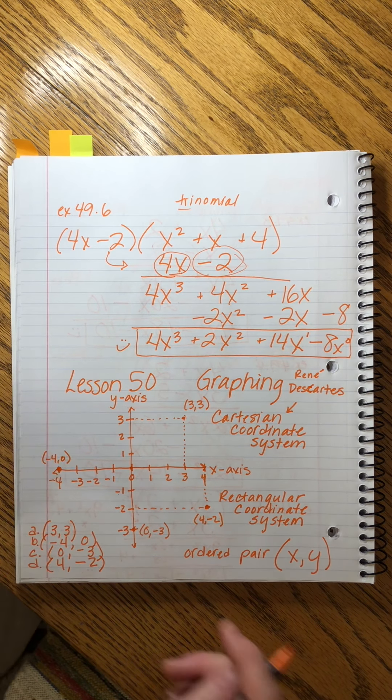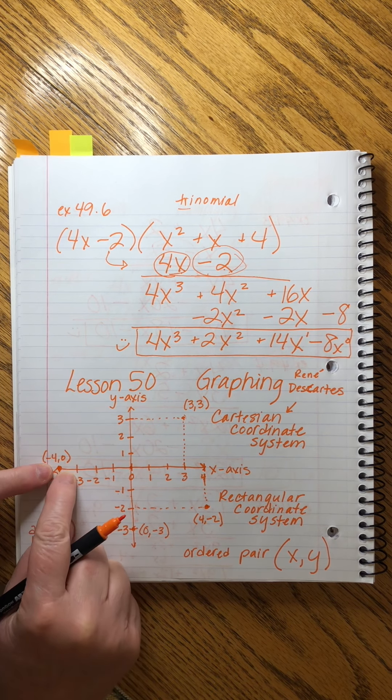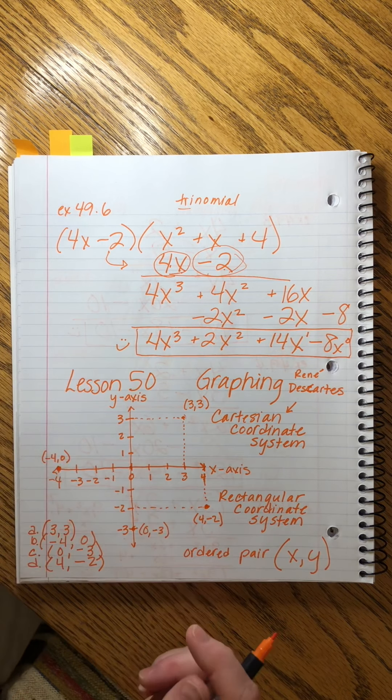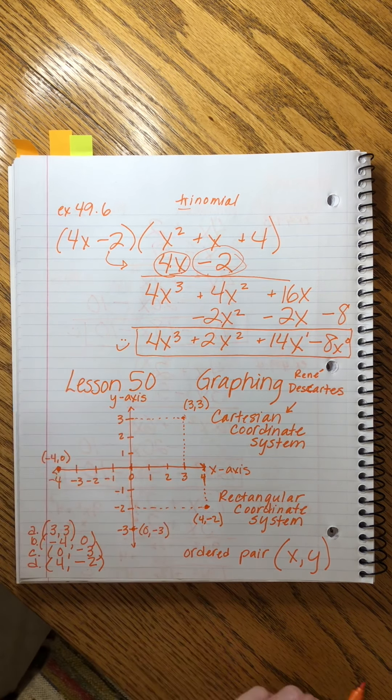So these two don't really have rectangles because 0 was one of the coordinates, so there's nowhere to draw the line from. But these two, we can imagine how the rectangles look. You don't have to draw the rectangles. Again, I'm just doing that to help you understand.